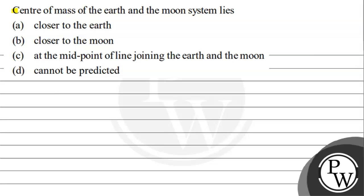Hello, the question says that center of mass of the earth and moon system lies, and the options are: closer to the earth, closer to the moon, at the midpoint of the line joining the earth and the moon, or cannot be predicted.